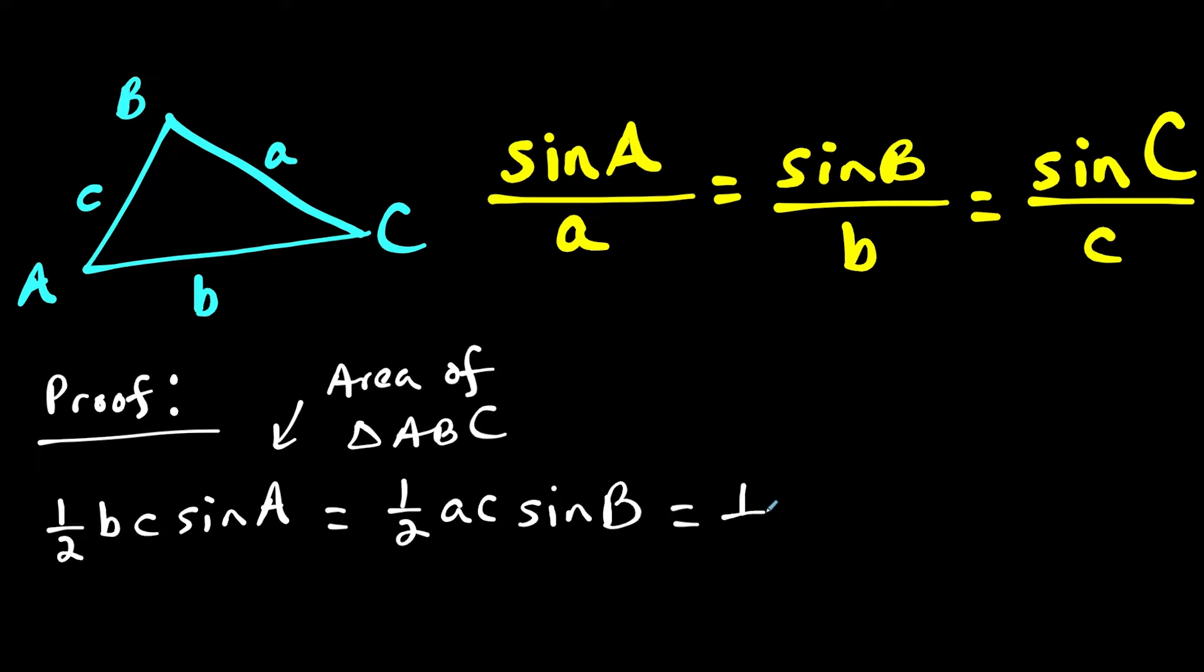And then the third way of expressing this would be to say one half AB, and then we have sine of angle C, which is the angle between sides A and B.